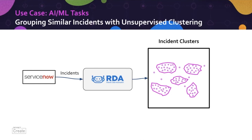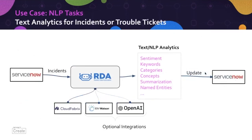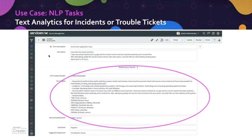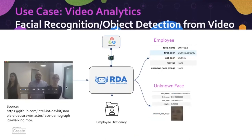In another scenario, we apply unsupervised ML clustering techniques to identify groups of similar incidents. We also apply NLP techniques on trouble tickets or incidents, with integrations for Watson and OpenAI — showing NLP insights updated directly in the incident console. In an e-bonding scenario, you can send incident data to multiple different tools or destinations simultaneously using streaming techniques. We also have integration bots for facial recognition and object detection using the OpenCV library.